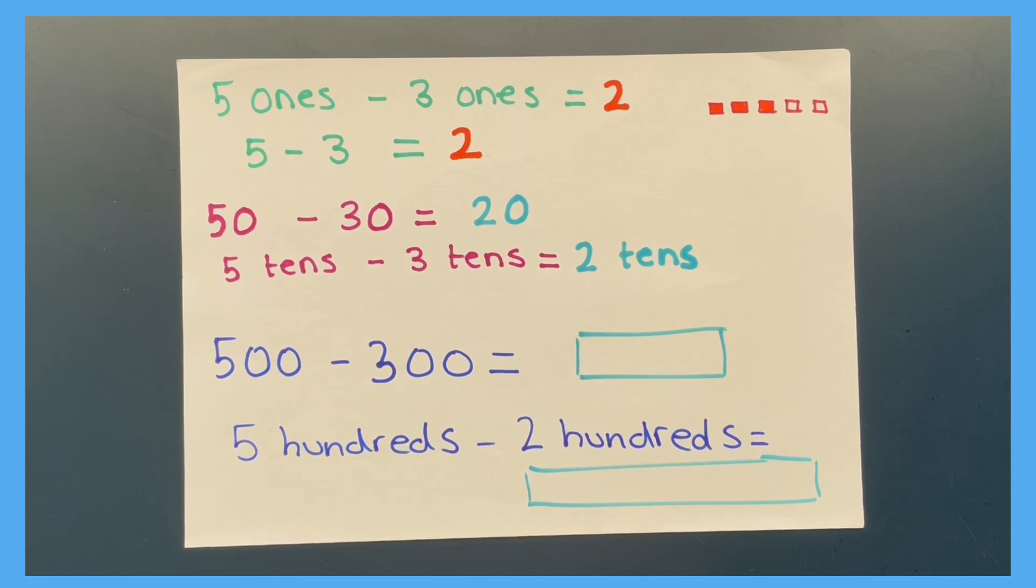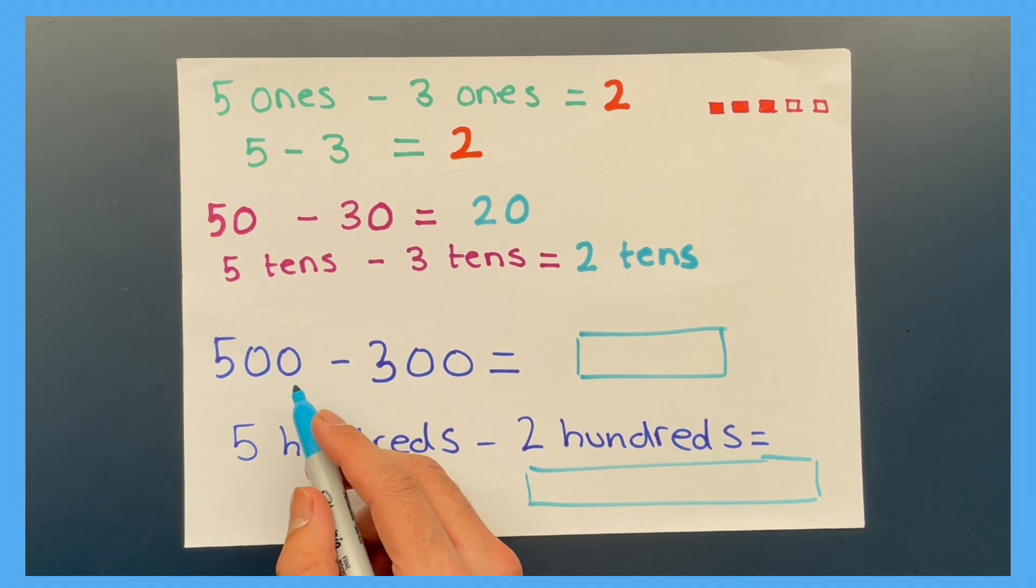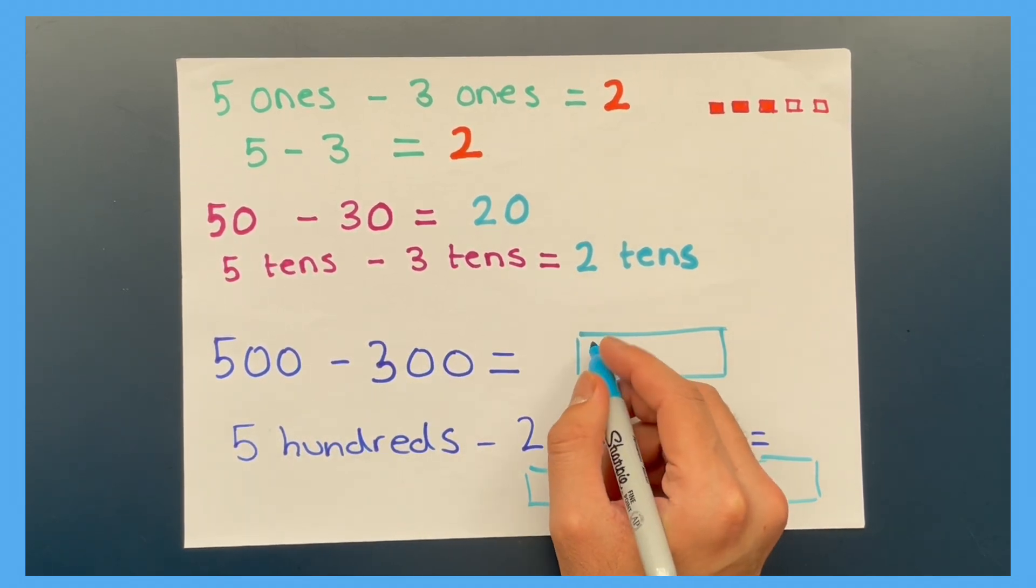Let's see if you can answer these questions. Five hundred take away three hundred equals two hundred.